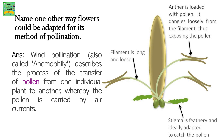Name one other way flowers could be adapted for pollination. It's wind pollination, also called anemophily — the transfer of pollen from one plant to another carried by air currents. The adaptation of such a flower is that the filament is long and loose. The anther is loaded with pollen and dangles loosely from the filament, thus exposing the pollen. The stigma is feathery and ideally adapted to catch the pollen.